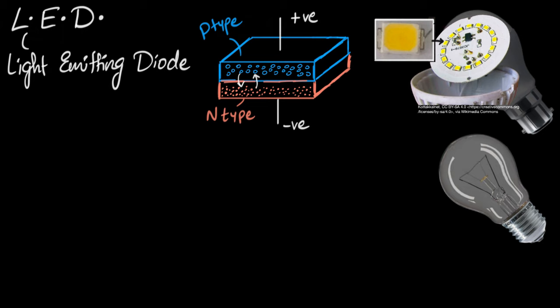But that's the question now. Why is it that when you pass current, they start glowing? Well, that's because every time an electron recombines with a hole, it starts giving out light. But why does that happen? Well, let's look at this a little more carefully.